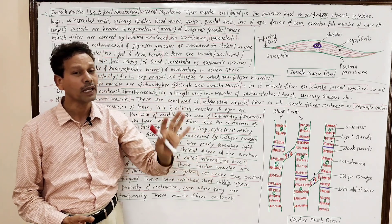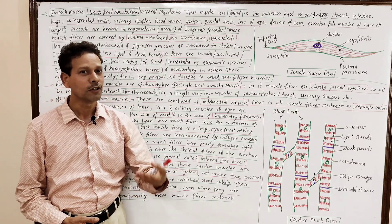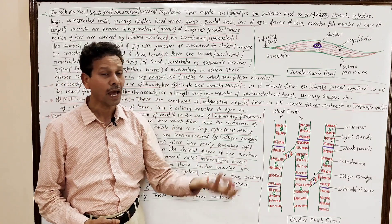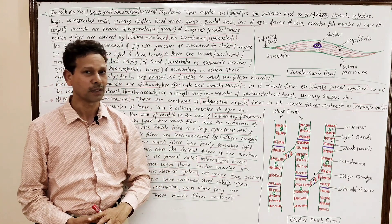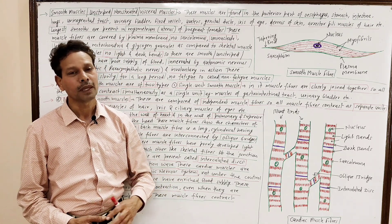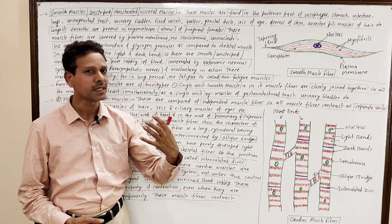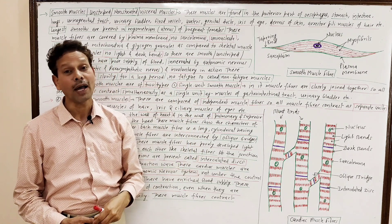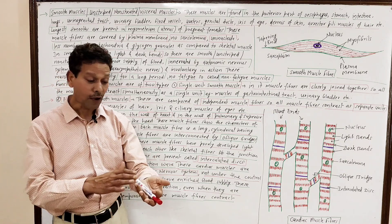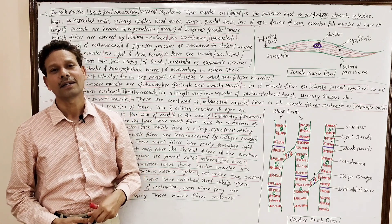Smooth muscles are commonly found in our internal body organs — in our viscera — like the posterior part of the esophagus, in our gastrointestinal tract (lining of stomach, wall of small intestine, large intestine), in our urinogenital tract, in our urinary bladder, in the ciliary muscles and iris of the human eye, as well as in the erector pili muscles of skin hair.